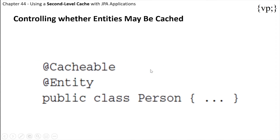Now, to control whether entities may be cached — to specify that an entity may be cached, add the @Cacheable annotation on top of your class at the class level.